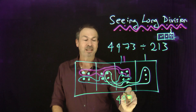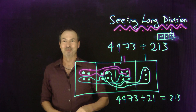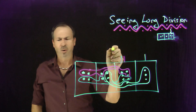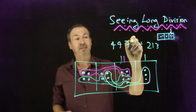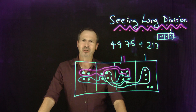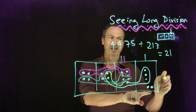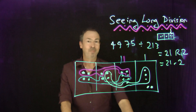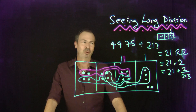As practice, try 4,473 divided by 21 — logic tells me the answer must be 213. Can you get 213 from that? Now, what if you do this and end up with two dots left over? You say the answer is 21 with a remainder of two — two dots left over. Some people use a big R, some use a small R. Mathematicians might say it's literally 21 plus 2 over 213.